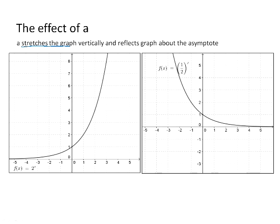It stretches the graph vertically, and if we change the sign of a, it can also reflect the graph about the asymptote. So we will have a look and see these two effects and how they affect the graph.